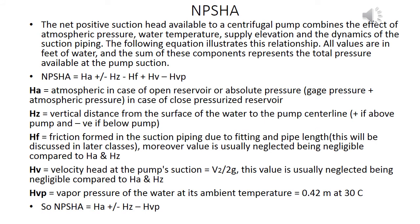The net positive suction head available (NPSHA) to a centrifugal pump combines the effects of atmospheric pressure, water temperature, supply elevation, and the dynamics of the suction piping. All values are in meters of water, and the sum of these components represents the total pressure available at the pump suction. The equation is: NPSHA = HA ± HZ − HF + HV − HVP.